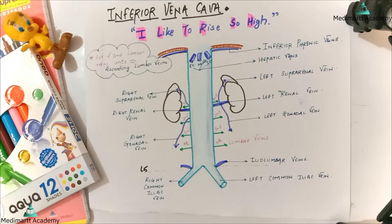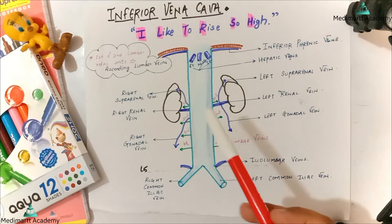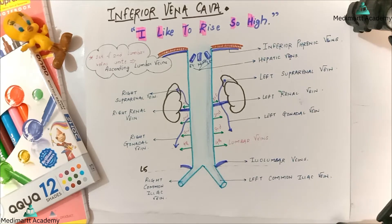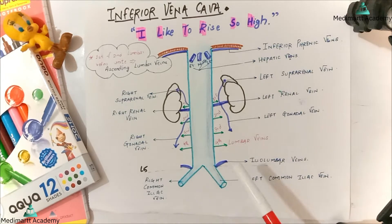The right and left common iliac veins fuse to form the inferior vena cava above. This union of the right and left common iliac veins occurs opposite the body of the fifth vertebra.